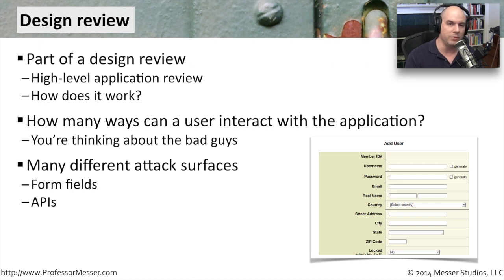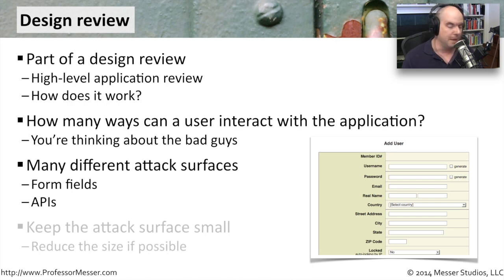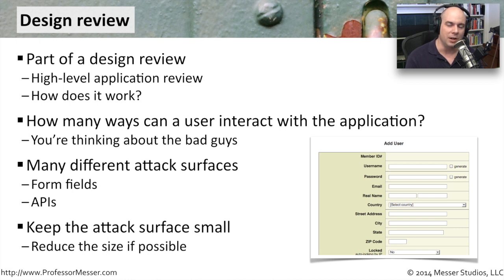All of these attack surfaces — whether they're something obvious like a field or something behind the scenes like an API — need to be considered. Part of your design review is really going to be looking at the details of the application. That's why a lot of people don't want to add APIs or allow API access, because that opens you up for security concerns. You want to keep that attack surface very small. If you're able to limit what people can do in the application and the type of input available, then you're also limiting what bad actors can do. Your design review should look at the balance between the usability of the application and the security concerns associated with that usability.